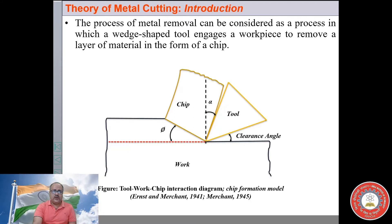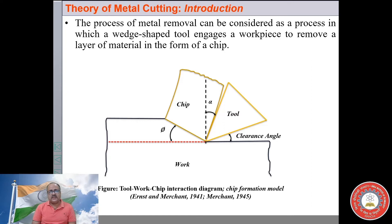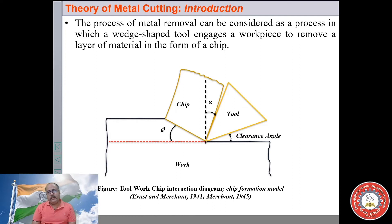The model of metal cutting was first introduced by Merchant and his associate Ernst in 1941 in a published paper, and again refined in 1945. This is a very simplistic model, yet it is accepted and used worldwide till now. This model is basically a tool-work-chip interaction diagram that tries to explain how metal cutting takes place. In any metal cutting process, you can visualize that the tip of the tool is a wedge-shaped tool.